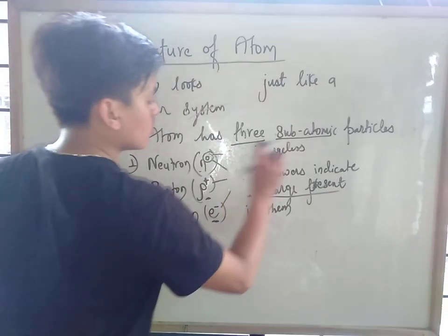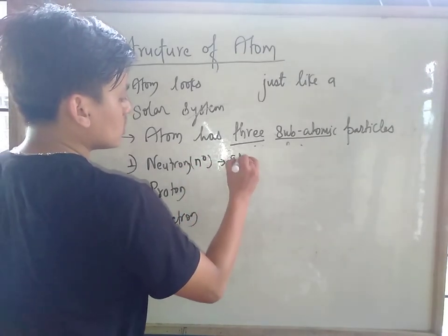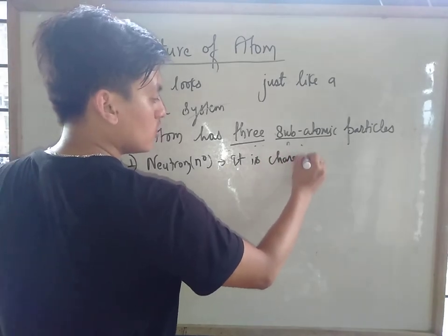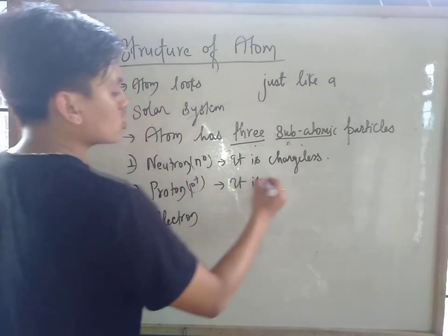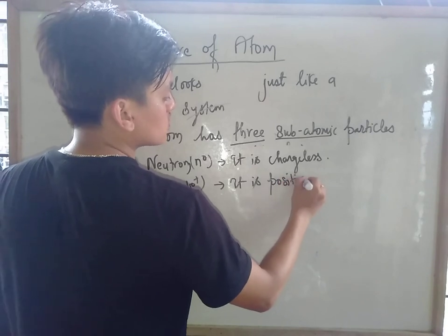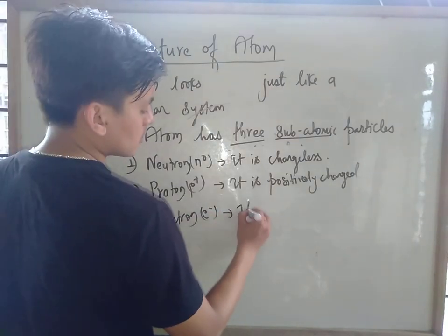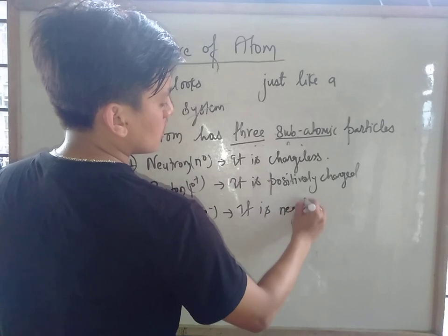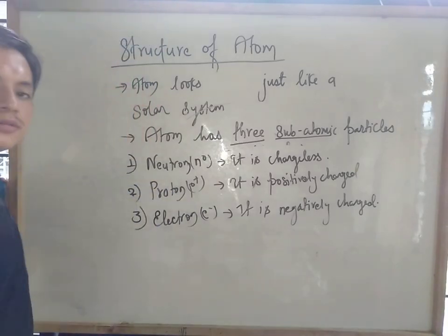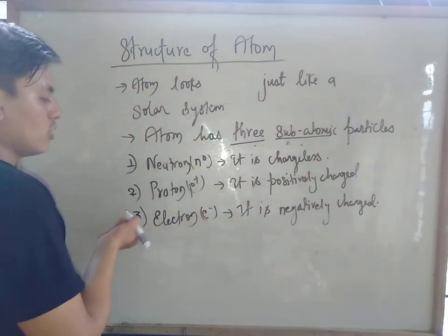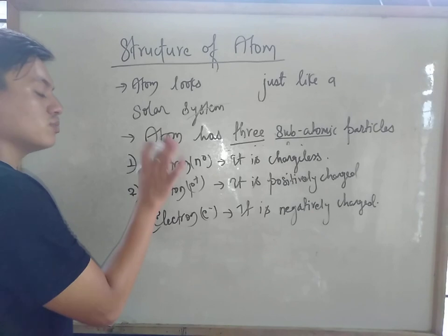So the neutron is chargeless — that superscript zero means it has no charge. The proton is positively charged (p+). The electron is negatively charged (e−).